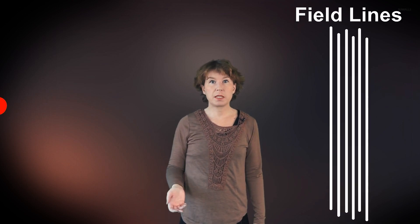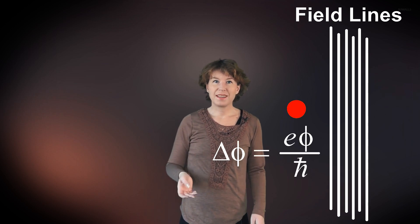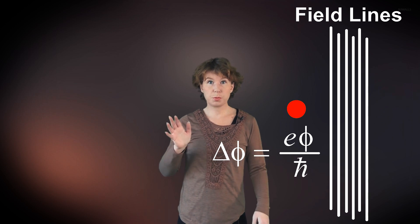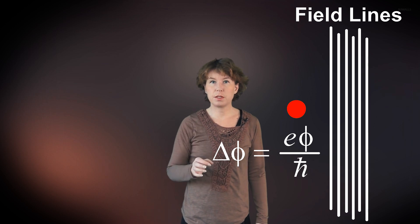The Aharonov-Bohm effect says that the wave function of a charged particle in an electromagnetic field obtains a phase shift from the potential of the background field. I know that this sounds abstract, but the relevant point is that it's the potential that causes the phase shift, not the field.